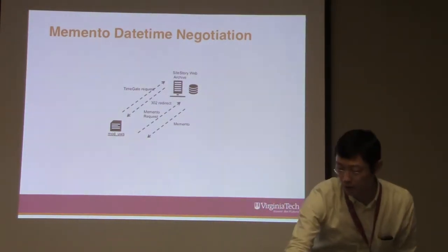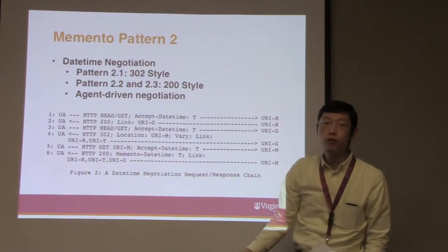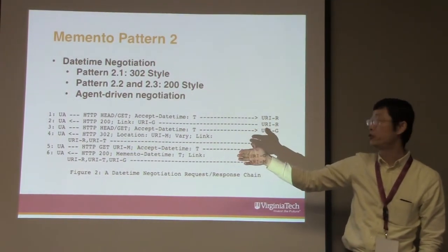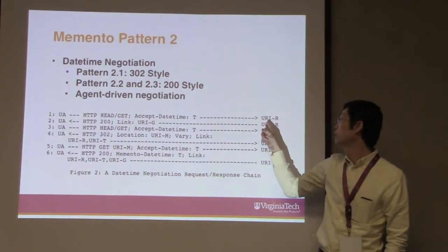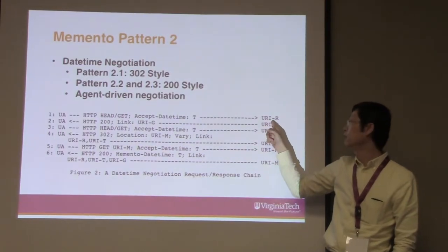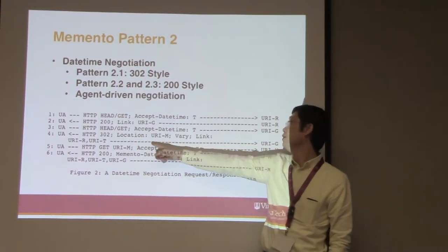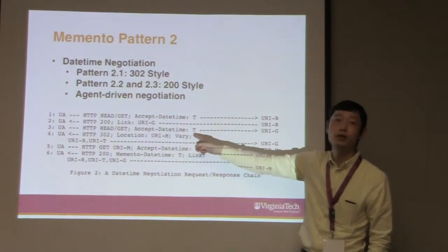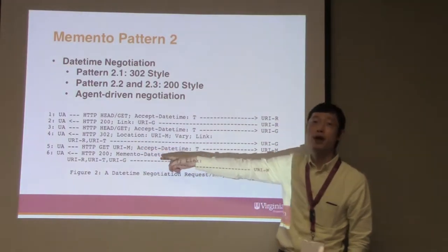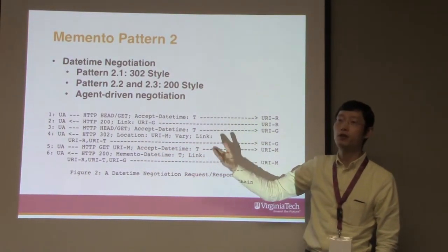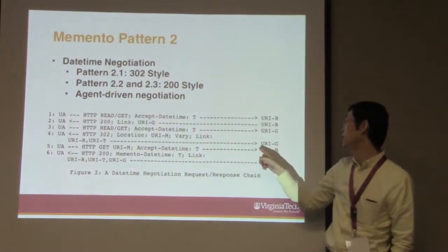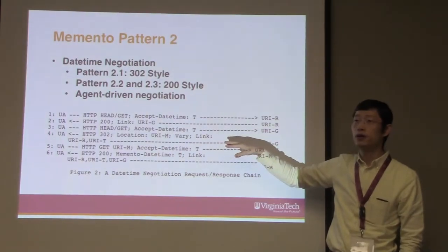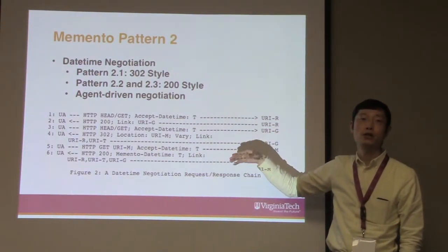There are a lot of variations. If you are not very familiar with Memento protocol, this is the most typical one — actually a little more complicated than what I just showed you: it's a three round-trip. First, you send a request to your regular original URI. It will respond with a URI to the time gate. Then you send another request to the time gate with an Accept-Datetime header. The time gate will send back a time map showing multiple memento options. Then the user agent sends the final request to get the memento back. As you can see, this typical request and response is fairly chatty — three round-trips.